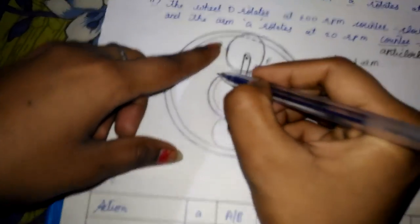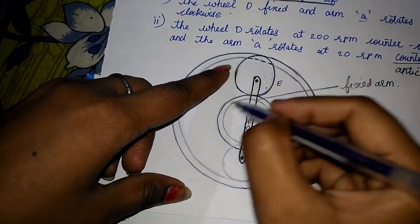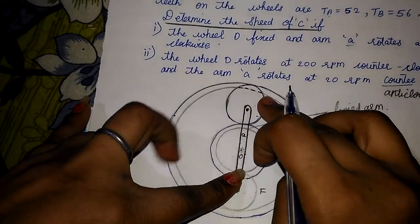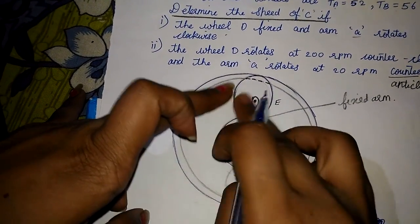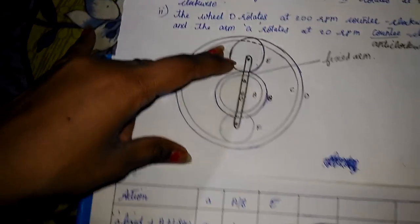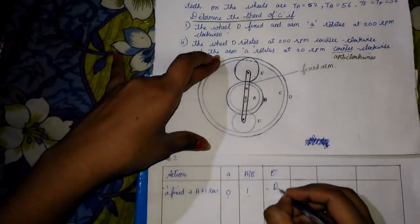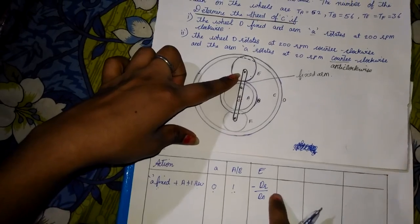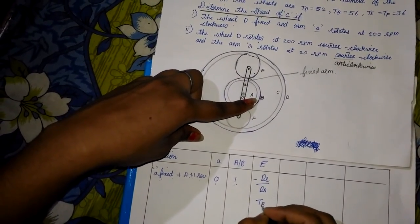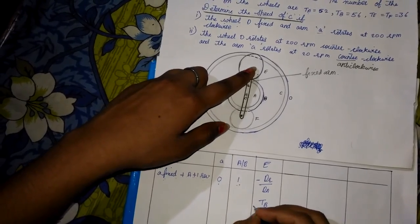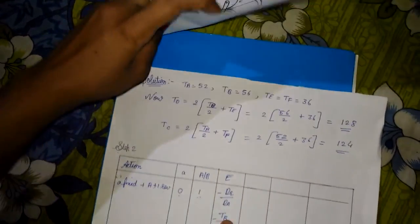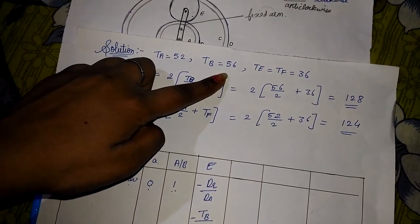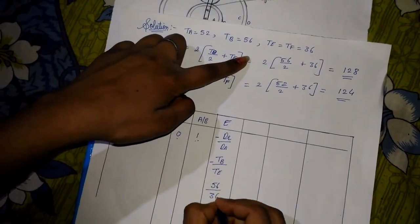Gear E is connected to gear B. Teeth of B is the driver and teeth of E is the driven. Since E rotates in the anticlockwise direction relative to B, we put a negative sign. So the value is: minus (teeth of B / teeth of E) = minus 56/36.